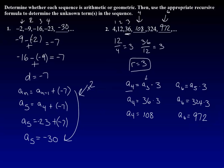So I said a sub 4 is equal to the previous term, so a sub 3 times 3. And a sub 3 was 36, so I do 36 times 3 and I got 108.